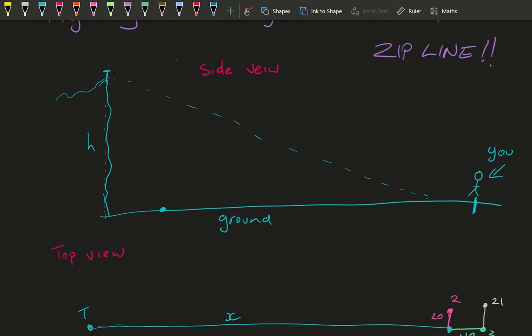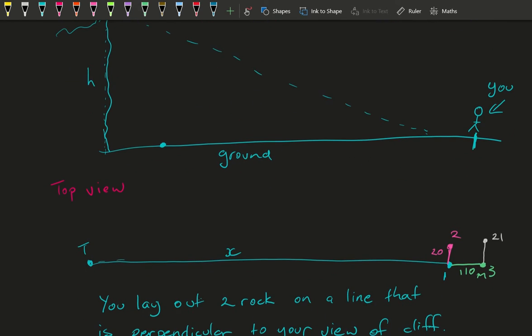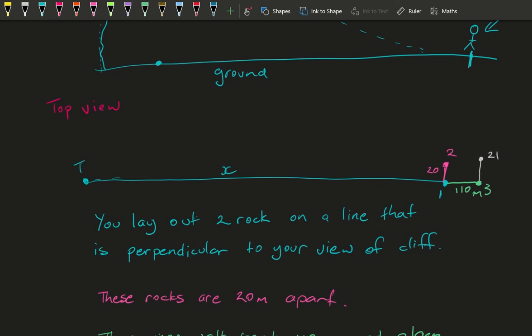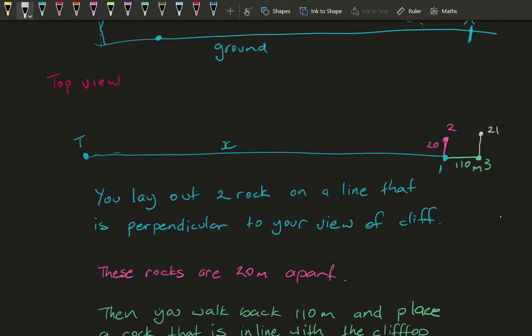So I wanted to then, instead of just having a side-on view like this, let's think of a top view. So that T is T for the top of the cliff and X is the distance. So you started standing at rock number one. You lay down a rock here and then you lay down another one in a line that's perpendicular to the bottom of the cliff there. So I've marked it in colors, so hopefully they stand out for you.